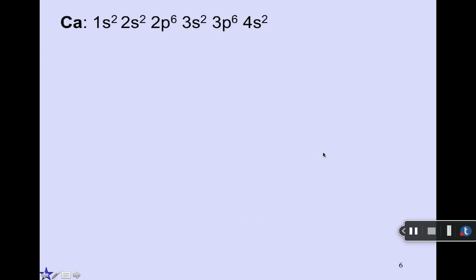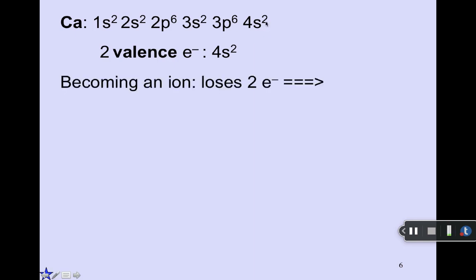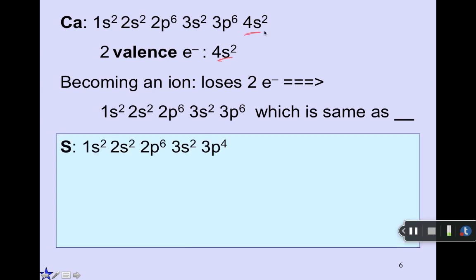All right, so let's try a couple more examples. We already did calcium, but we'll review it again. Calcium has an electron configuration of 1s2, 2s2, 2p6, 3s2, 3p6, 4s2. Its two valence electrons are the outermost electrons, the 4s2 in the fourth shell. And so becoming an ion, it will lose two electrons. And the result is it loses the outer ones. The outer ones being the ones that are the valence electrons. And so the resulting configuration is the same thing as element 18, which is argon.